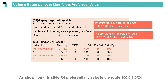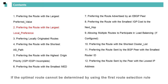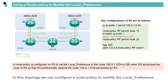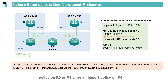If the optimal route cannot be determined by using the first route selection rule, the second rule is used to select the route with the largest local preference. In this topology, we can configure a route policy to modify the local preference so that R4 preferentially selects the route 100.0.1.0/24 advertised by R3. The route policy can be configured as an export policy on R3 or R5, or as an import policy on R4. In this example, an export policy is configured on R3.